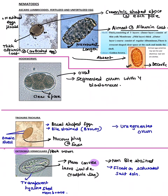For hookworm — the egg is oval shaped. Think of a hook sorting things into a proper place — it has a segmented ovum with four blastomeres to keep things properly arranged. There is also a clear space between the ovum and the shell, because the hook helps clear the space.